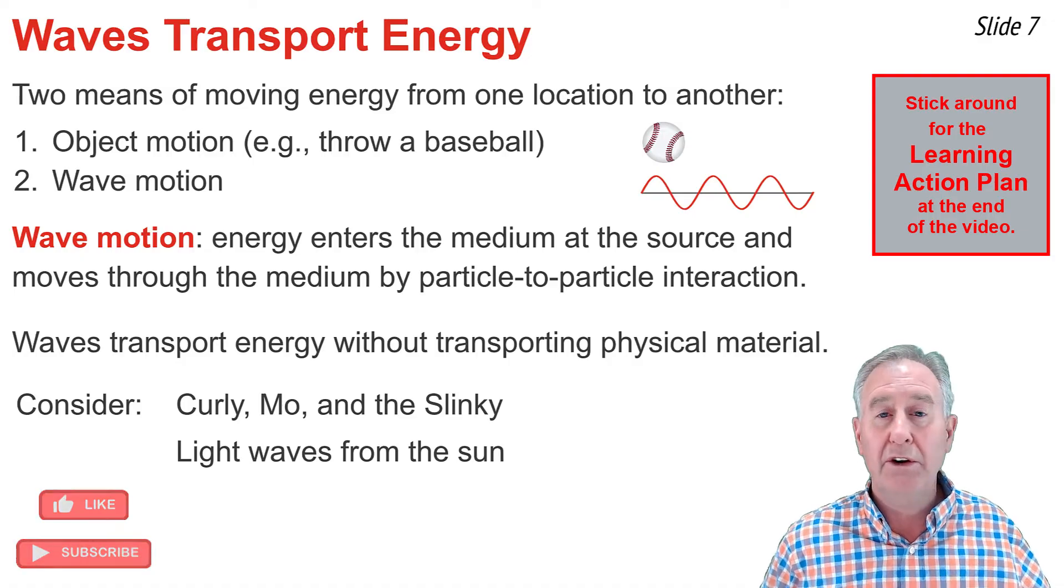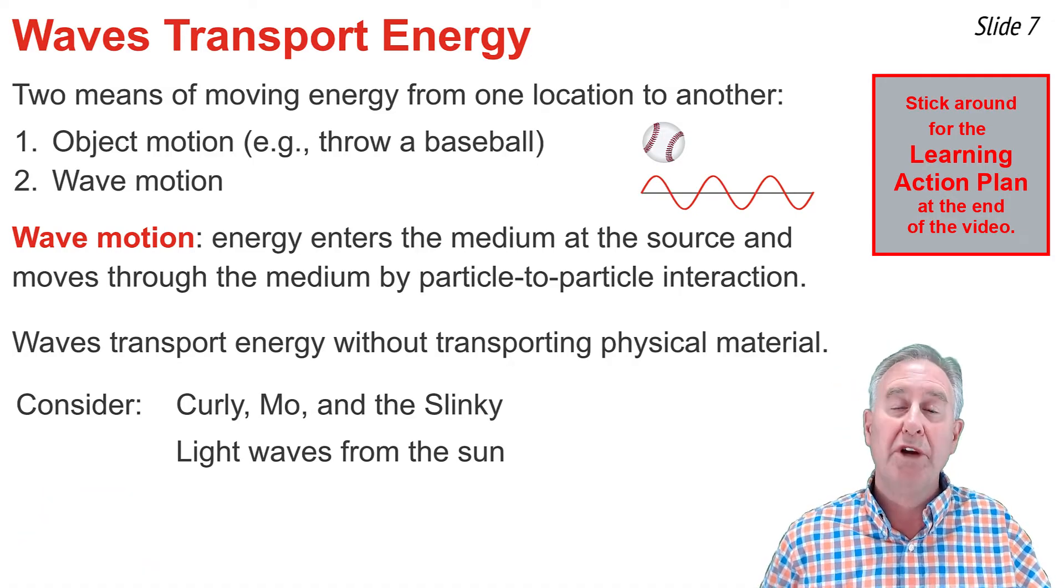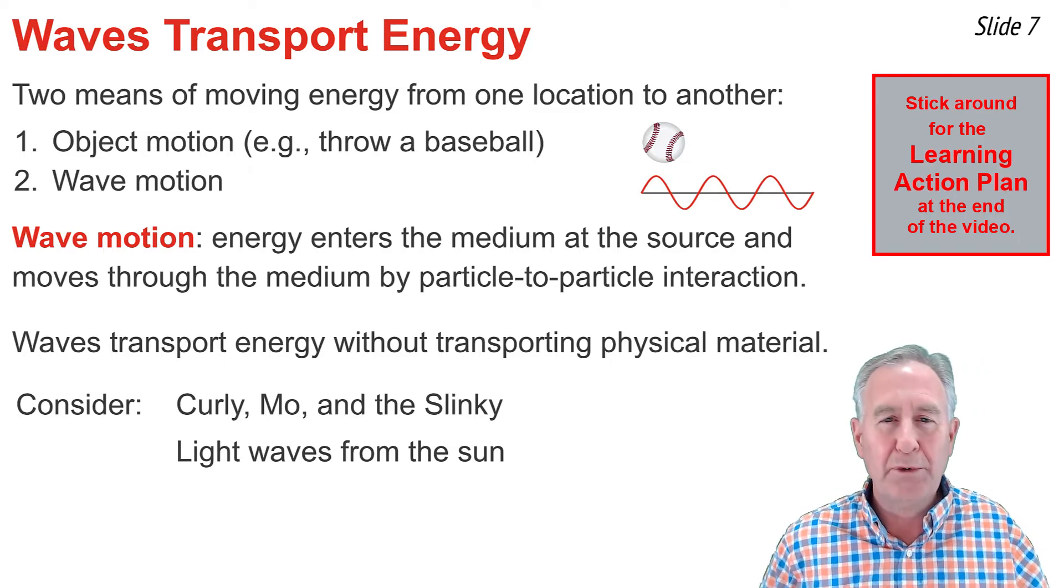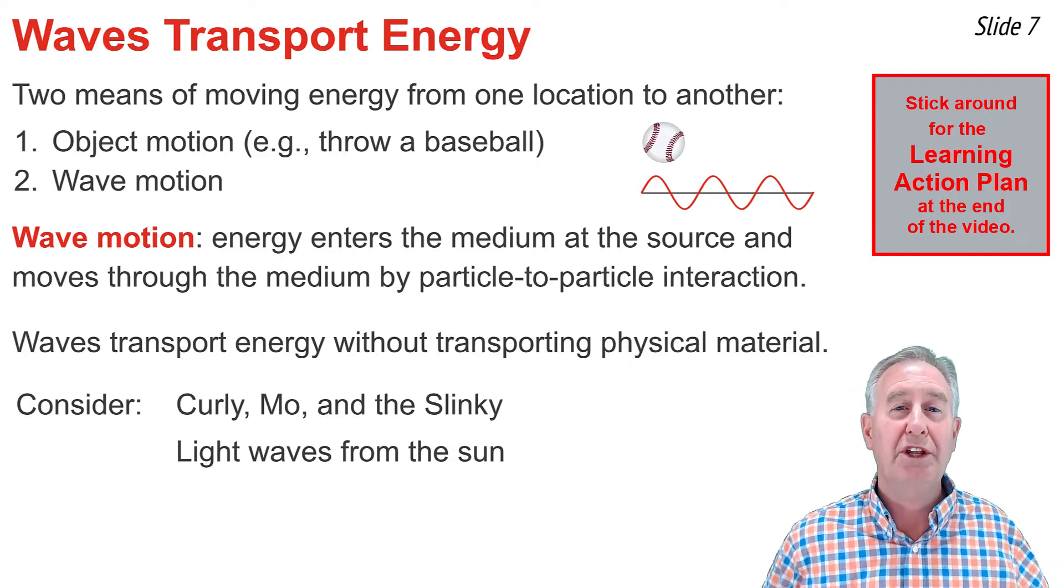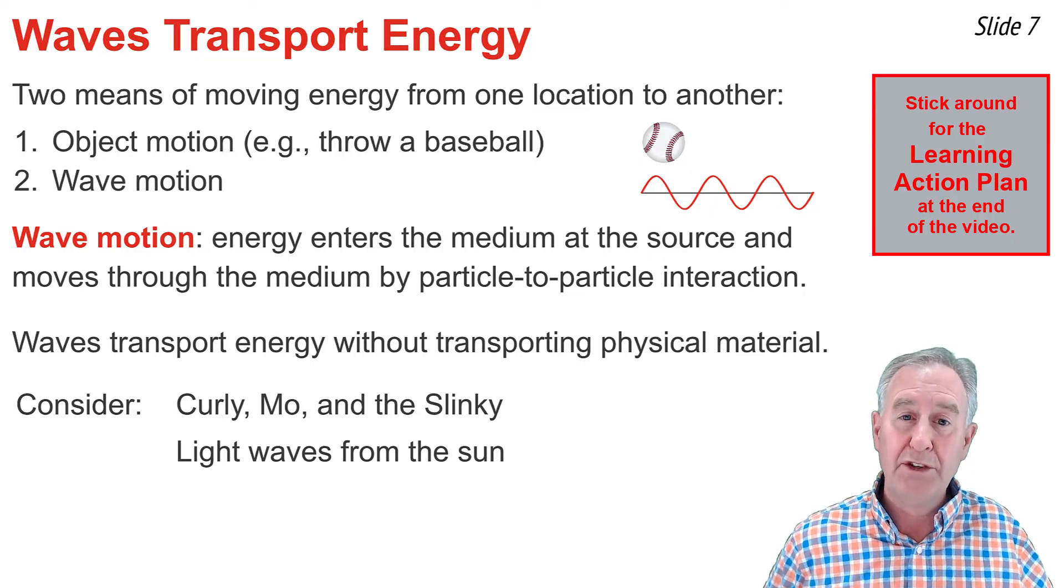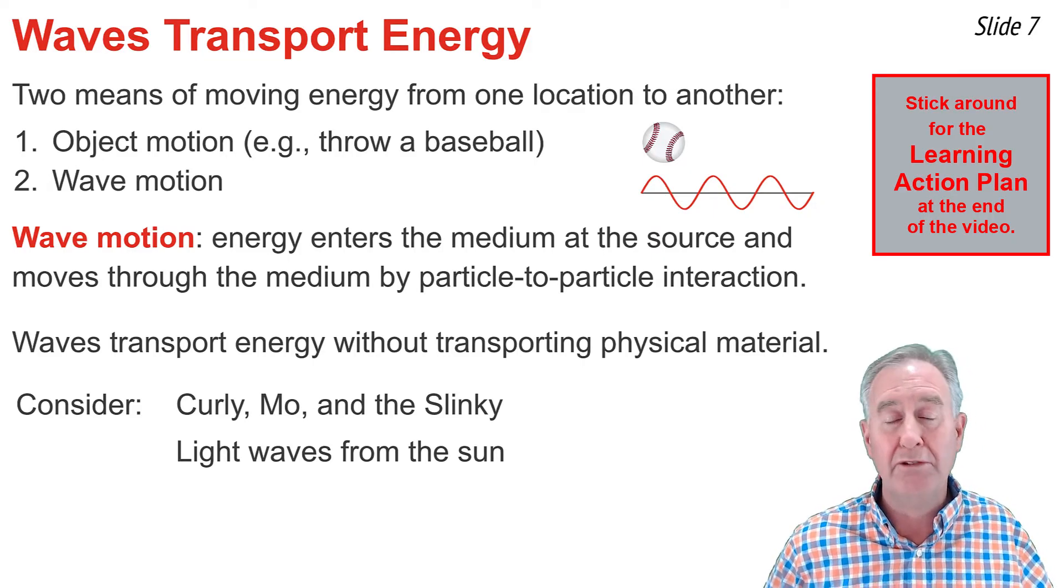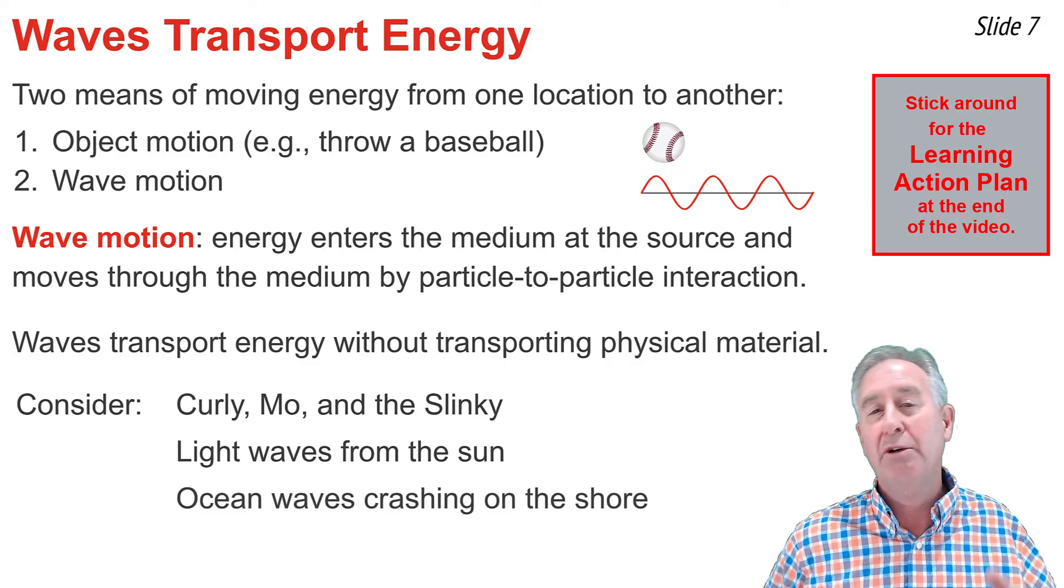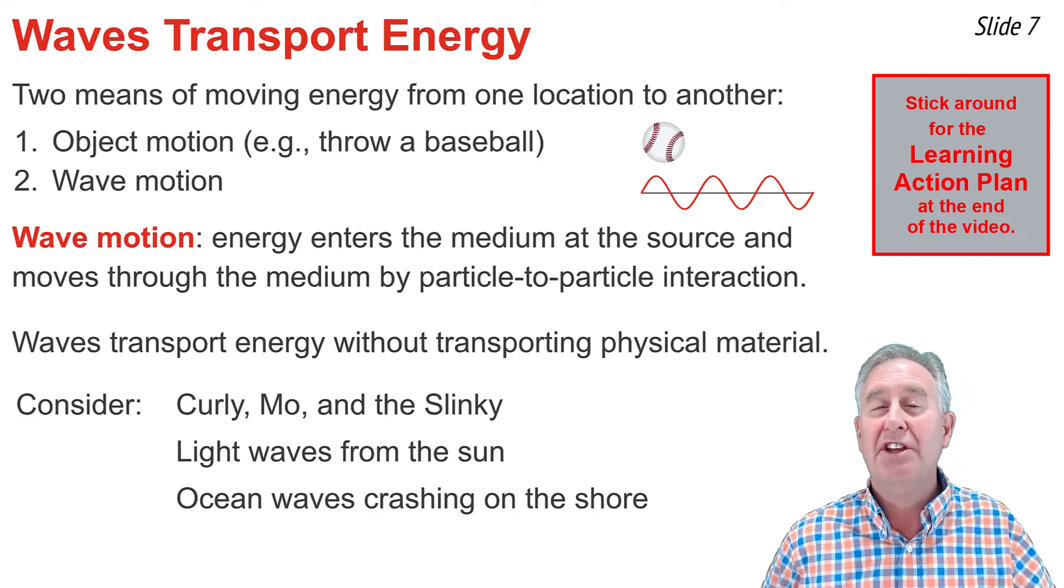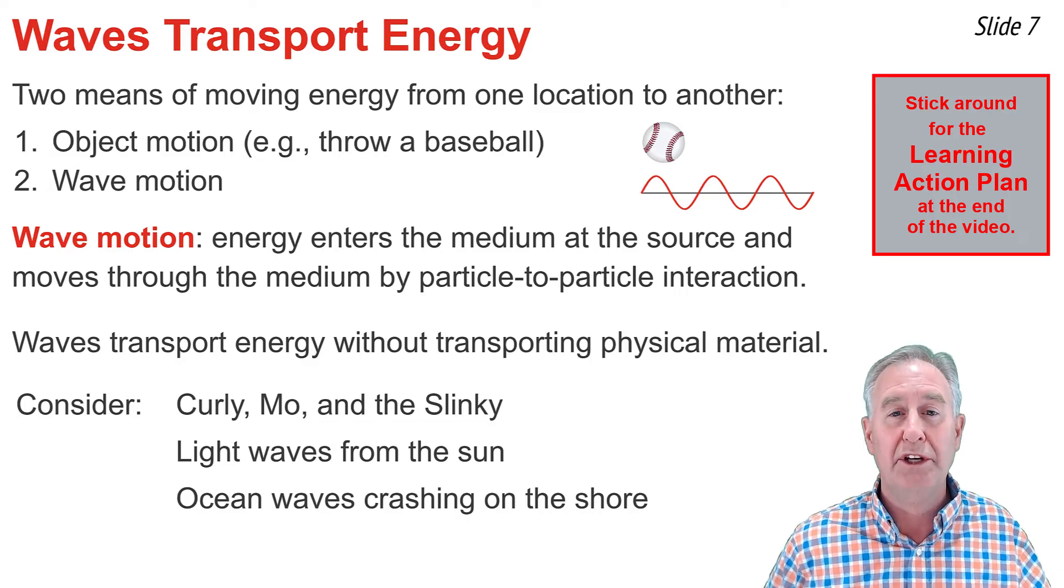We have light waves arriving on Earth to sustain life on Earth, coming to Earth without the actual transport of material. Well, we do have things coming from the sun to Earth, but that's not the reason that we have light waves reaching the Earth. Light waves are an example of the movement of energy without the transport of physical material. Ocean waves crashing up on the shore are examples of large amounts of energy that reach the shore without the water from the middle of the ocean coming to the shore. That's another example of energy transport without the transport or movement of physical material.